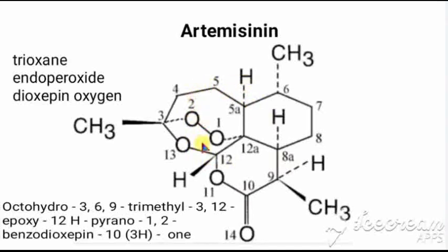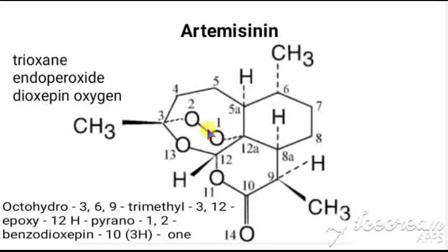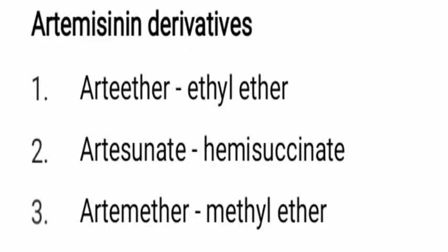In the case of artemisinin, the first ring has three oxygens and is called trioxane. What is trioxane? It contains an endoperoxide — that O-O bond inside the structure. We have already seen this dioxepine part, and with the epoxide oxygen added, it becomes a trioxane. So artemisinin is characterized by having an endoperoxide within its trioxane ring system.